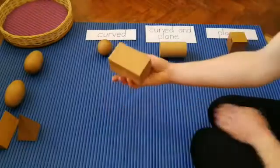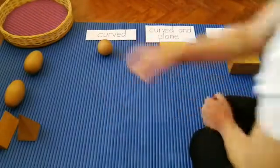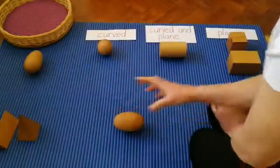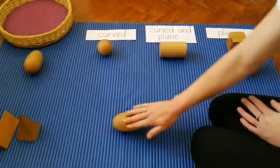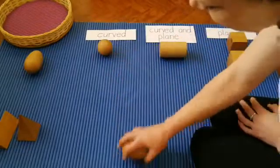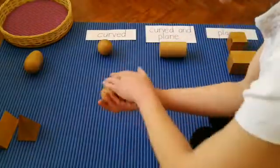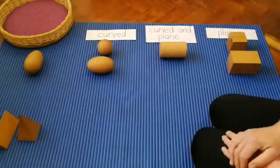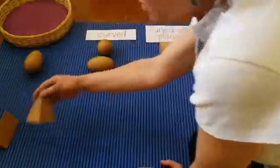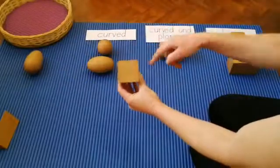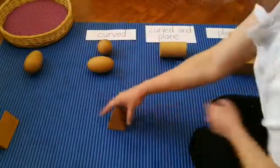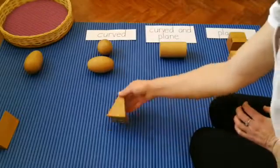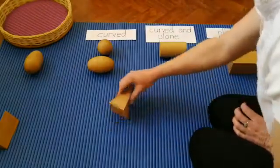Here we have the square based prism. This one is plain. Let's look at our ellipsoid. This is curved. What about our square based pyramid? That one's plain.